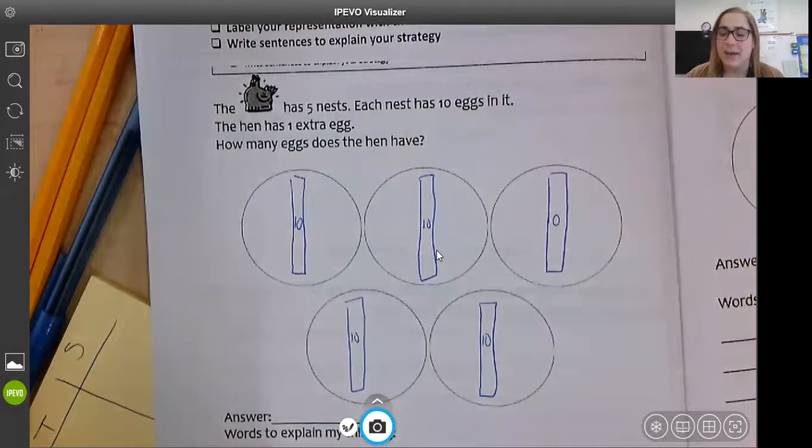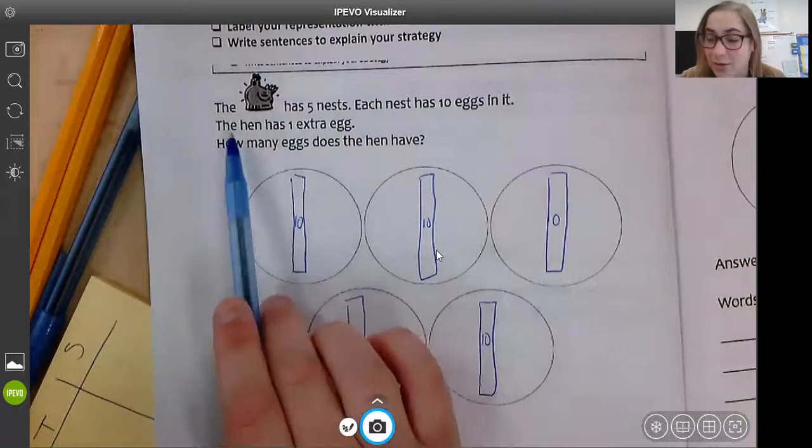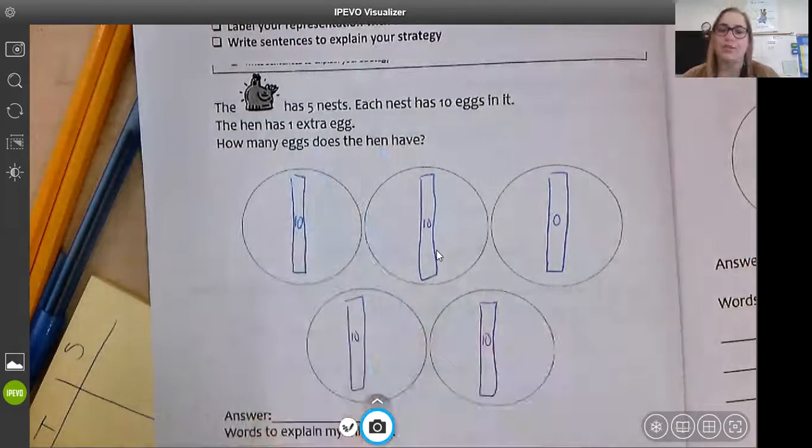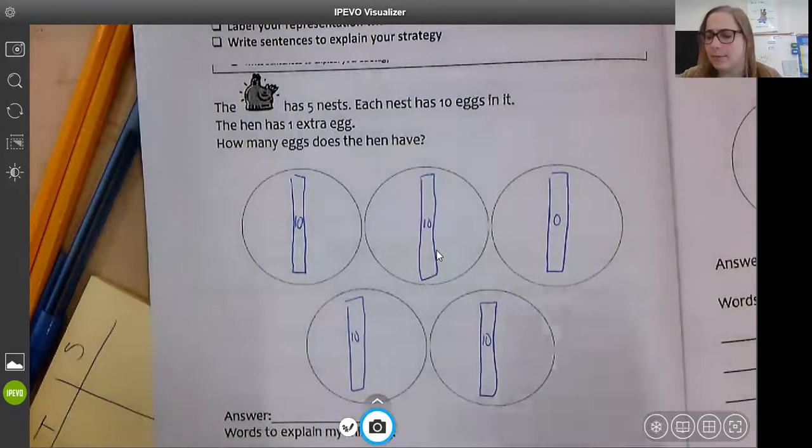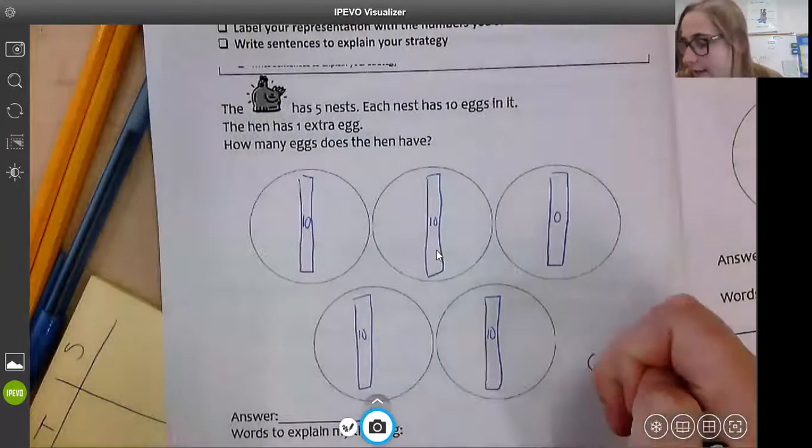But am I done now? No, the story also said the hen has one extra egg. Who has one extra egg? I know one doesn't make a 10. So let me draw the extra egg on the outside. That's a one.